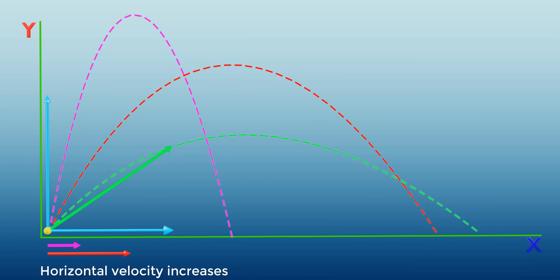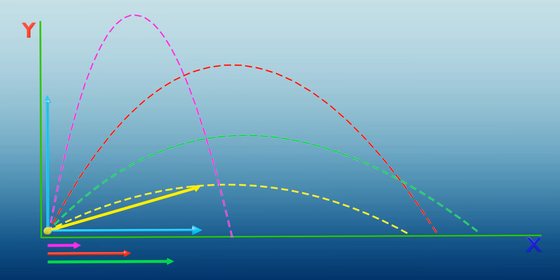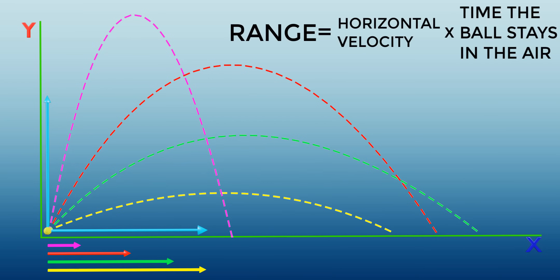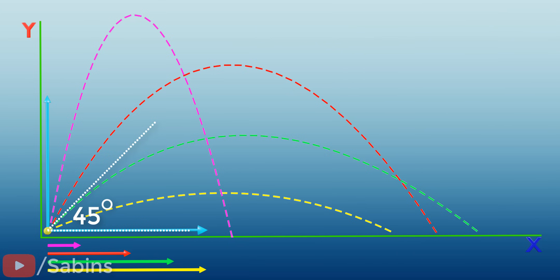Multiplication of two numbers will be maximum when both the factors have a good value. In this case, the time the ball spent in the air and horizontal velocity has a good value at the angle of 45 degrees. This is why you get maximum range when you throw the ball at 45 degrees.